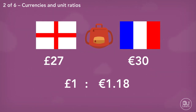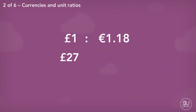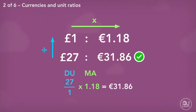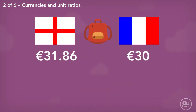To solve this problem, we would have to compare the prices when they are in the same currency, so we can either convert pounds to euros or euros to pounds. Let's start with converting £27 into euros. We lay out our information, then divide up and multiply across: 27 divided by 1, multiplied by 1.18, equals €31.86. Comparing the two euro amounts, it's clear that it's cheaper in France — Kofi should buy the bag when he is in France.